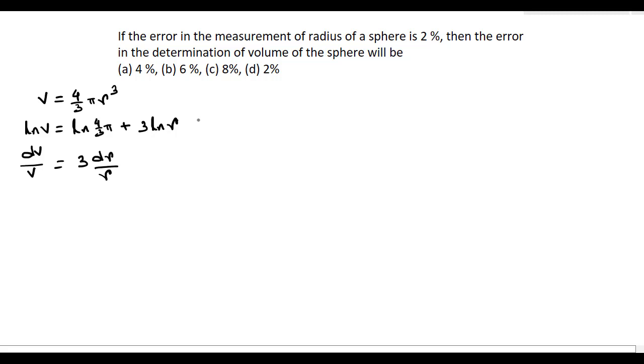So, the error in the measurement of volume that is delta V by V is equal to 3 delta r divided by r.